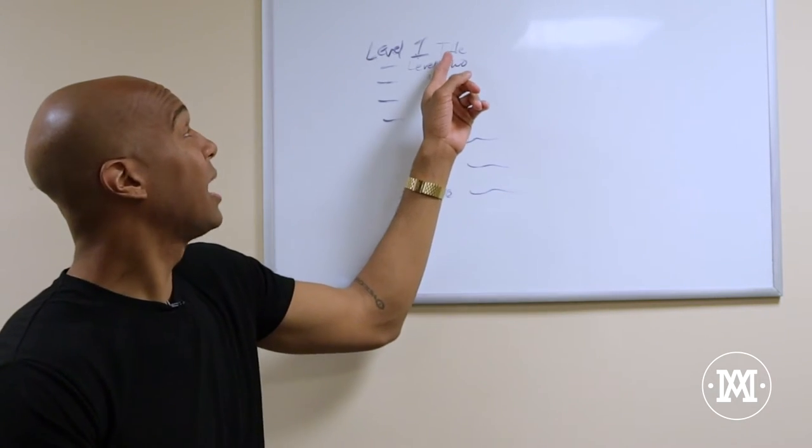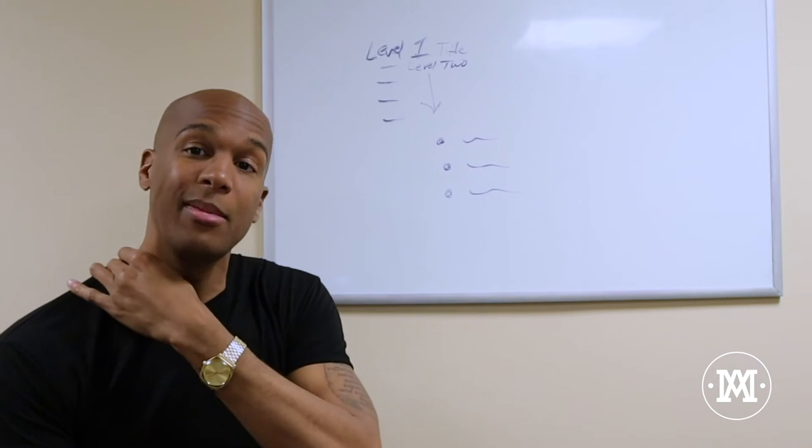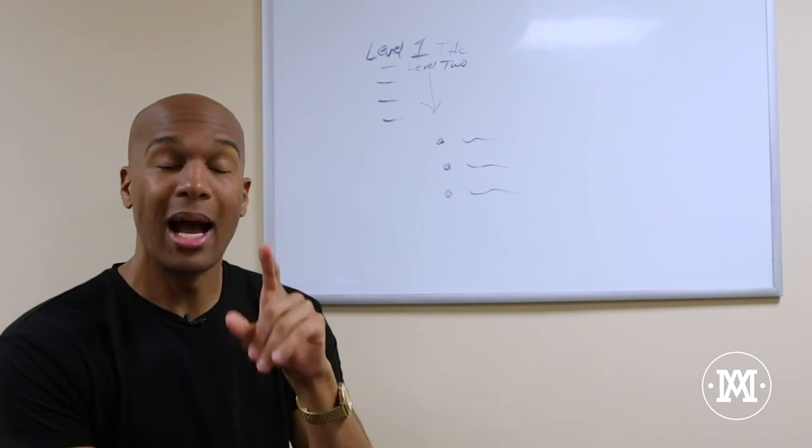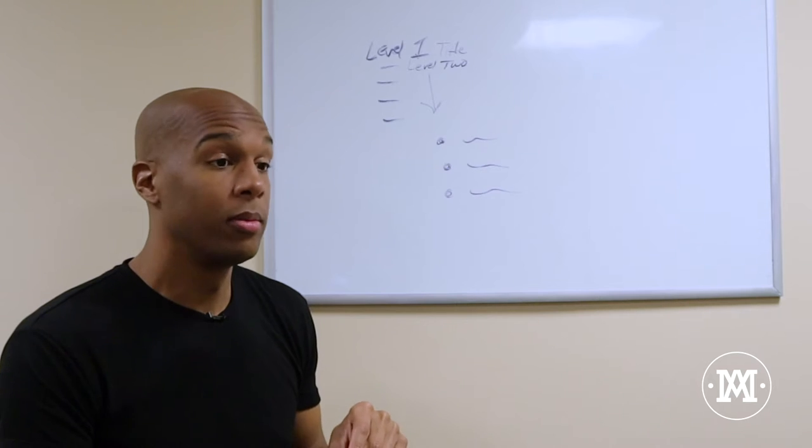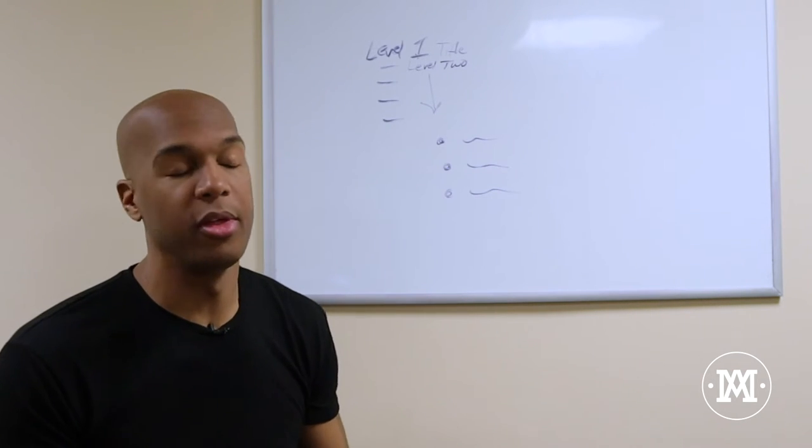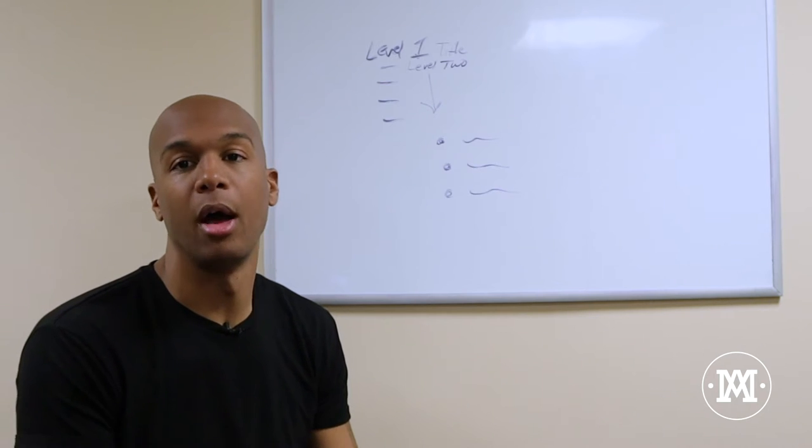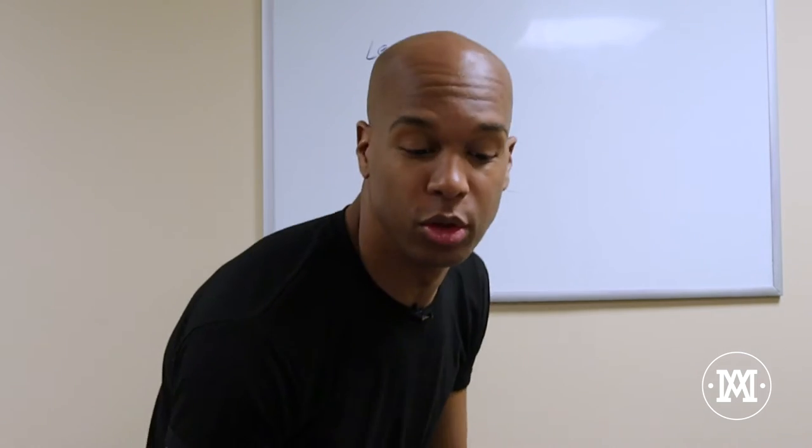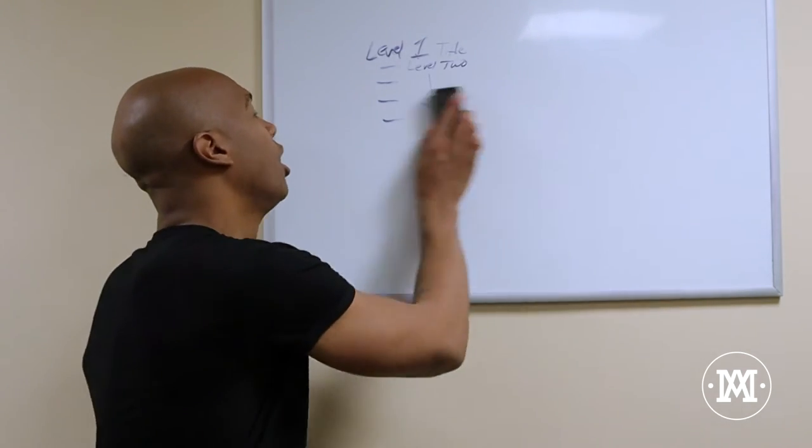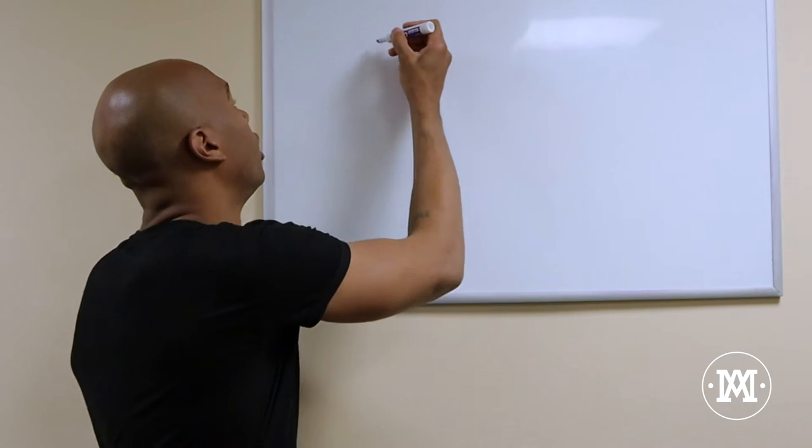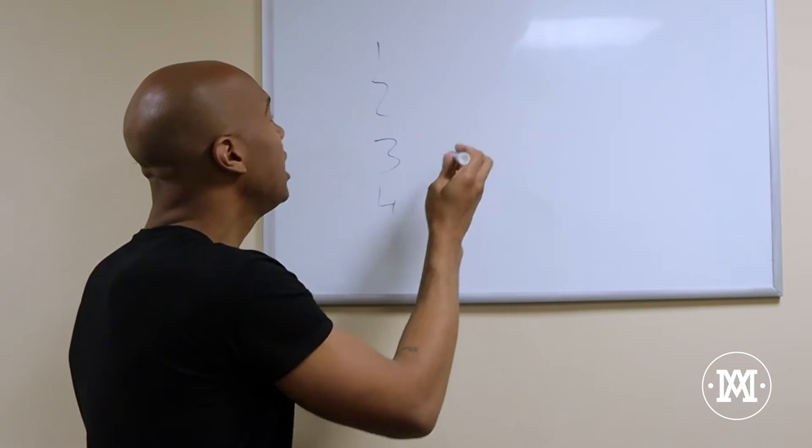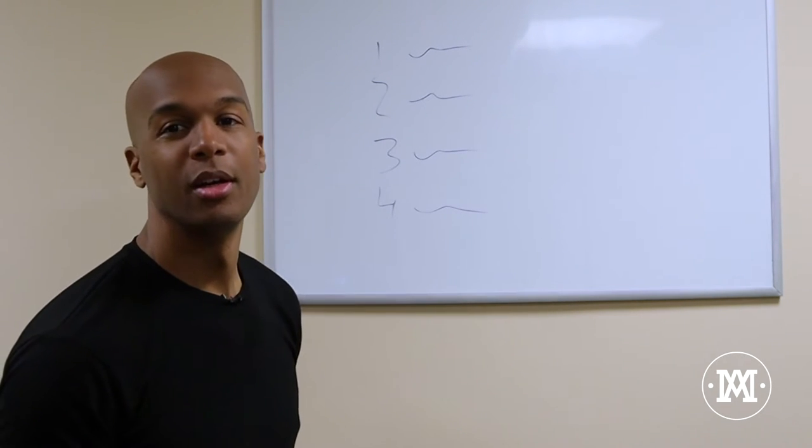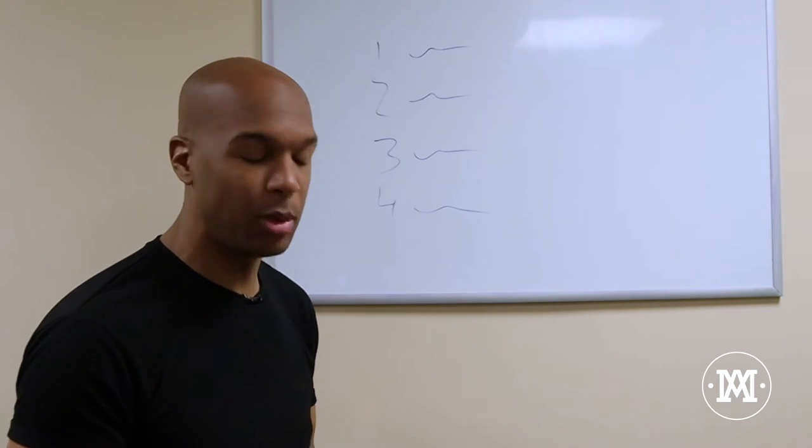This is what our file system is going to look like. I want to make sure that I'm titling it word searchable, but bigger than the search, even just knowing where to go. If you knew nothing about my businesses and I gave you my hard drive, when you plug the hard drive in, the first thing you're going to see is five folders - each folder with the title of one of my businesses. Then you're going to know exactly what they are. You click one.